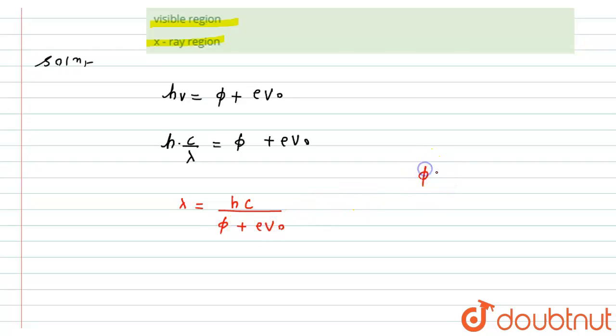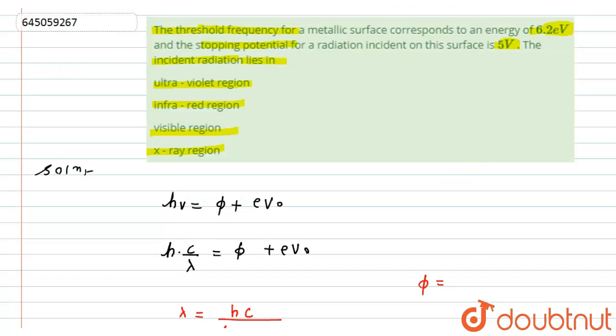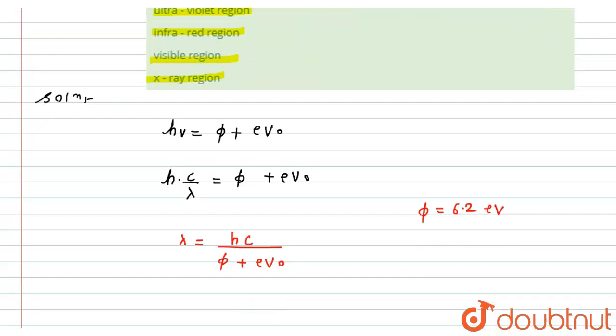Now, according to the question, the energy is given to us that is 6.2 electron volt. It means the value of φ is given to us, while the eV₀ value is given to us as 5 volt. Now, if we put the value here, so we get...